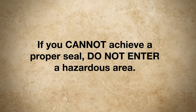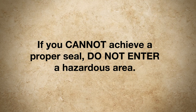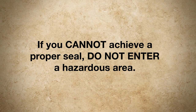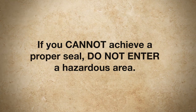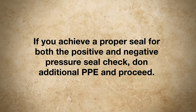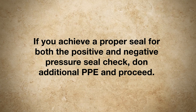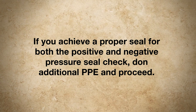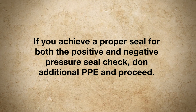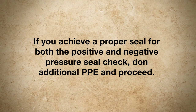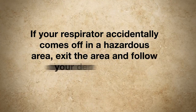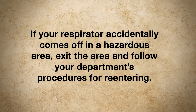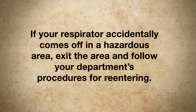If you cannot achieve a proper seal, you are not protected and should not enter a hazardous area. See your supervisor to determine the problem. If you passed both the positive and negative pressure seal checks, you have a proper seal. Don additional PPE that is required, such as your gloves, and proceed with your work. If your respirator accidentally comes off in a hazardous area, exit the area and follow your department's procedures for re-entering.